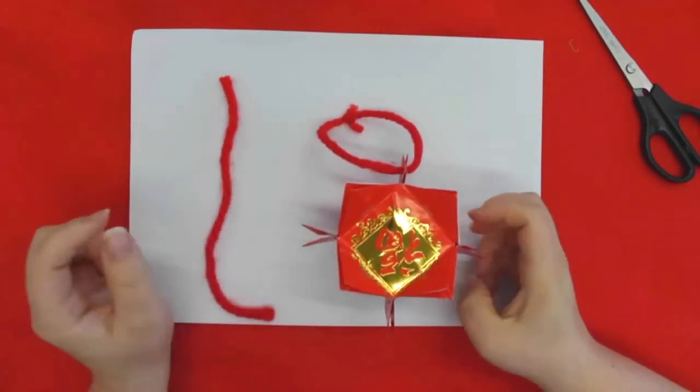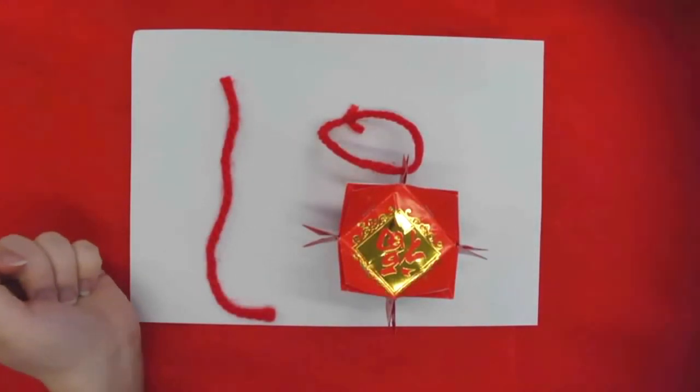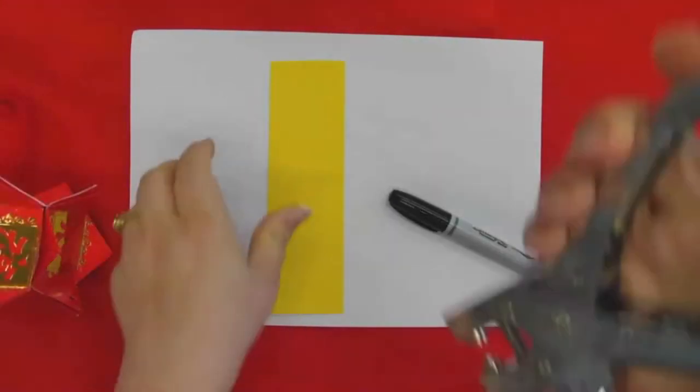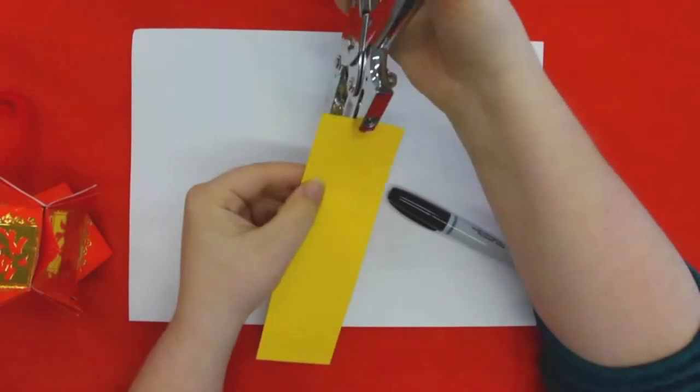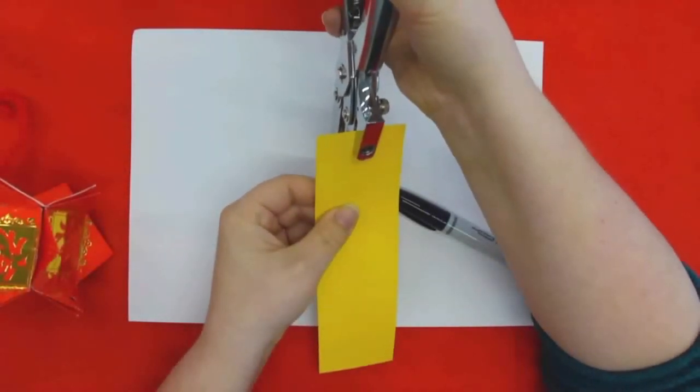And then next we need to write our Chinese greeting. Here's the little yellow piece of paper, we're going to put a hole right in the top middle so we can connect it onto our lantern.